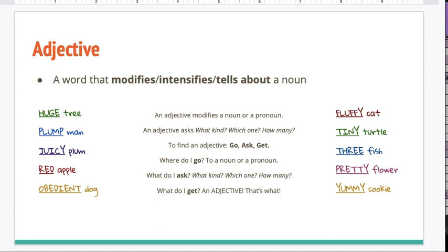Let's do our adjective jingle. Get ready. An adjective modifies a noun or a pronoun. An adjective asks what kind, which one, how many. Define an adjective: go, ask, get. Where do I go? To a noun or a pronoun. What do I ask? What kind, which one, how many. What do I get? An adjective. That's what. That was impressive.